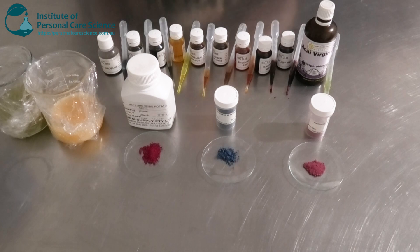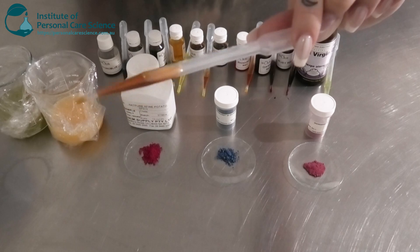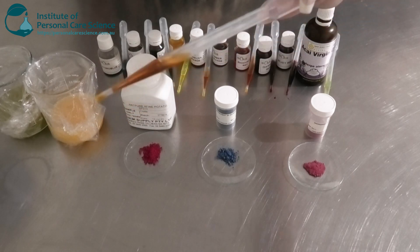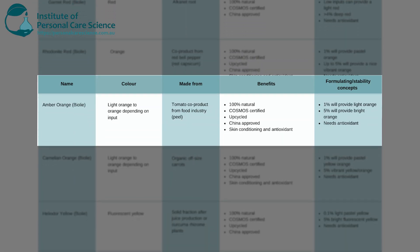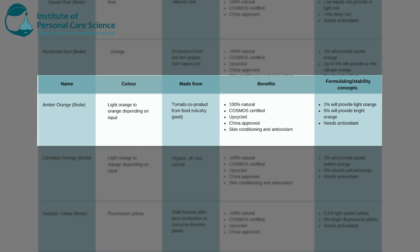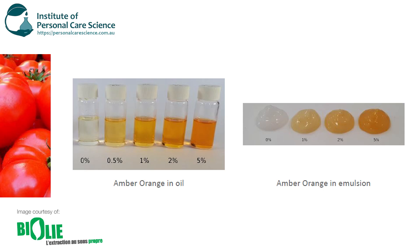The next one from Biola is the Amber Orange. Quite similar to the Rhodonite Red, this provides light orange to orange depending on input. It's made from tomatoes — specifically the peel of tomatoes — a co-product from the food industry, making it another upcycled material. It's 100% natural, Cosmos certified, China approved, and has skin and antioxidant benefits. Looking at the color chart: 1% provides a nice light orange in an emulsion, and 5% provides a bright orange. You need more to achieve a more solid color.